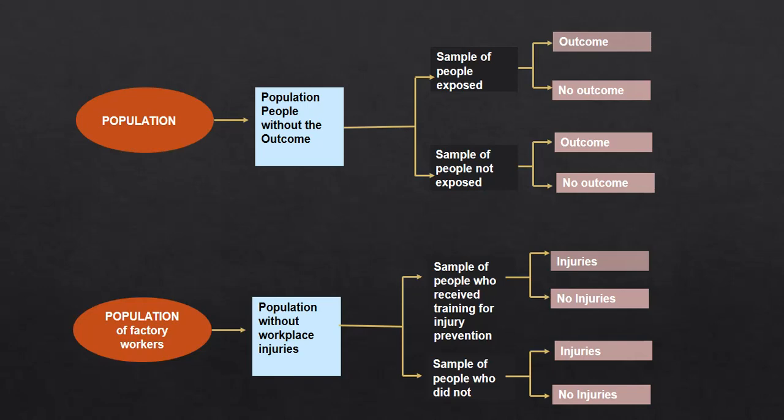Let's say you were a researcher talking about factory workers, and you want to talk about specifically, does some sort of training, which is your exposure, does this training prevent the outcome, which is workplace injury? So if you're a researcher, you start from here. You get a population of factory workers, a population specifically without workplace injuries, which is the outcome.